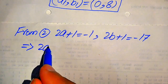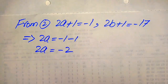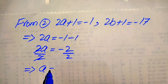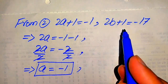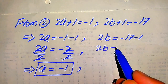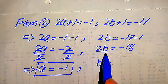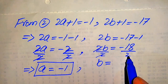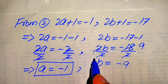From Case 2, moving plus 1 to the right hand side: 2a equals minus 1 minus 1, so 2a equals minus 2. Dividing both sides by 2, a equals minus 1. For b: 2b equals minus 17 minus 1, so 2b equals minus 18. Dividing both sides by 2, b equals minus 9.